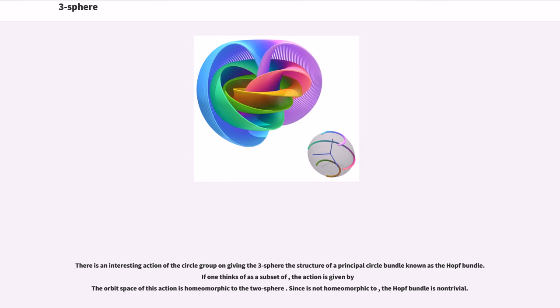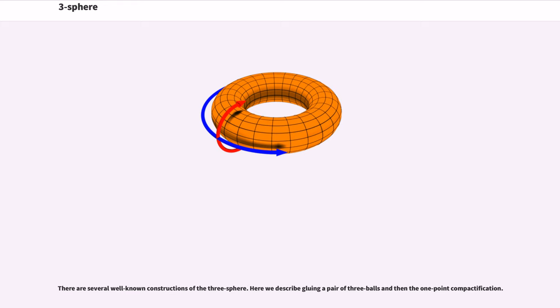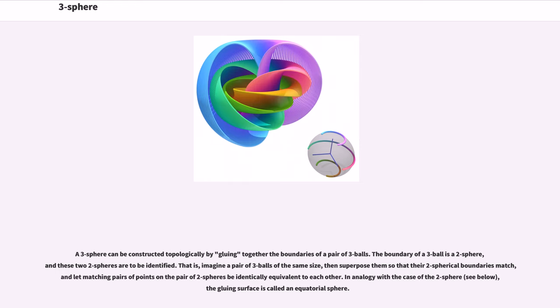Since is not homeomorphic to, the Hopf bundle is non-trivial. There are several well-known constructions of the three-sphere. Here we describe gluing a pair of three balls and then the one-point compactification. A three-sphere can be constructed topologically by gluing together the boundaries of a pair of three balls. The boundary of a three-ball is a two-sphere, and these two two-spheres are to be identified. That is, imagine a pair of three balls of the same size, then superpose them so that their two-spherical boundaries match, and let matching pairs of points on the pair of two-spheres be identically equivalent to each other.